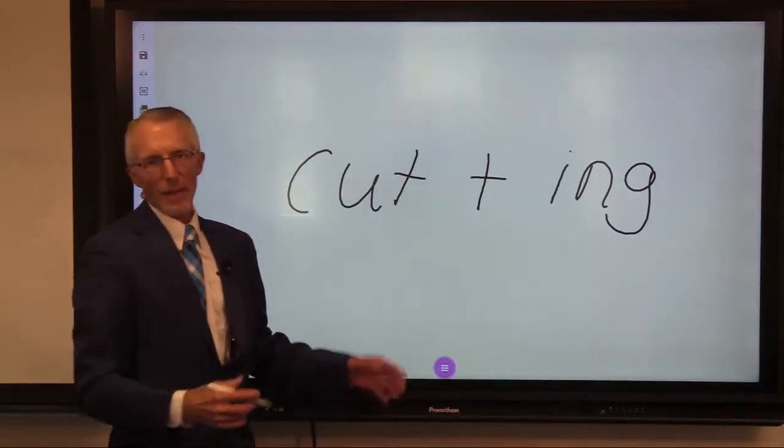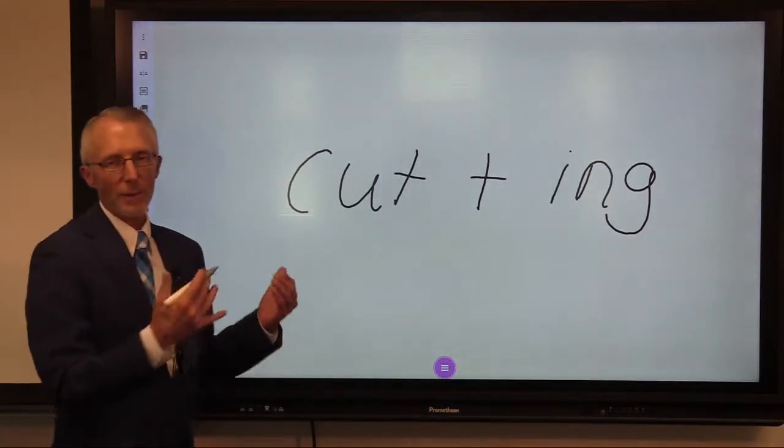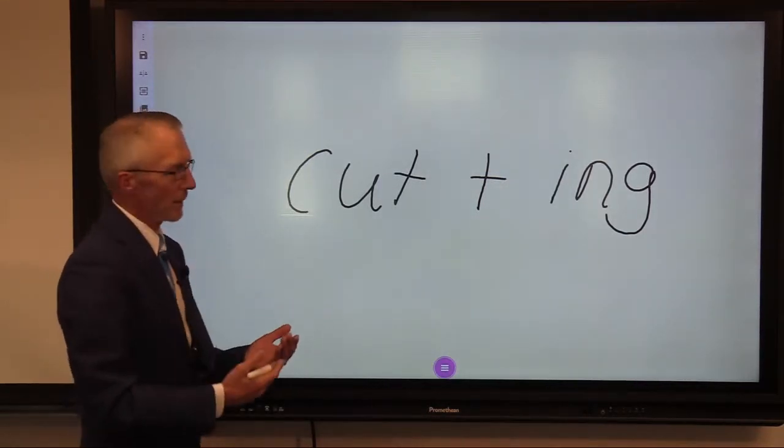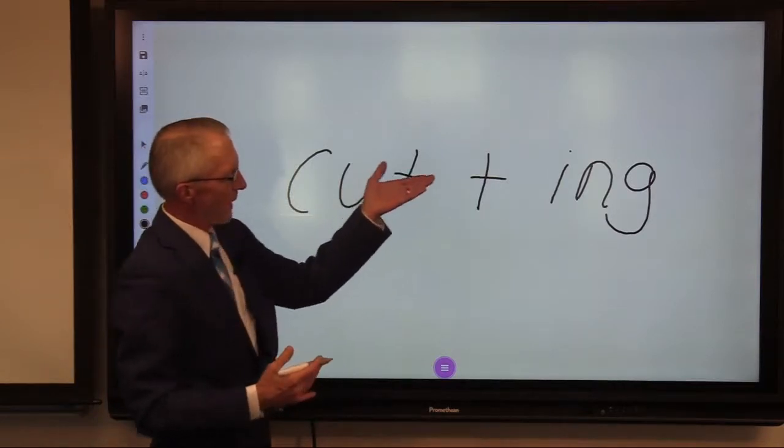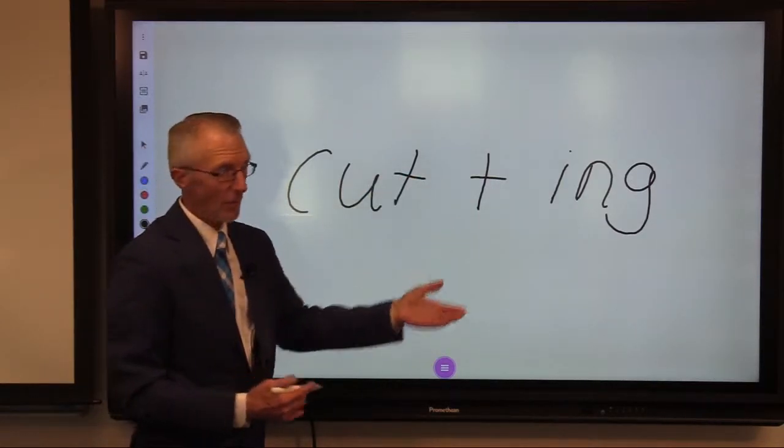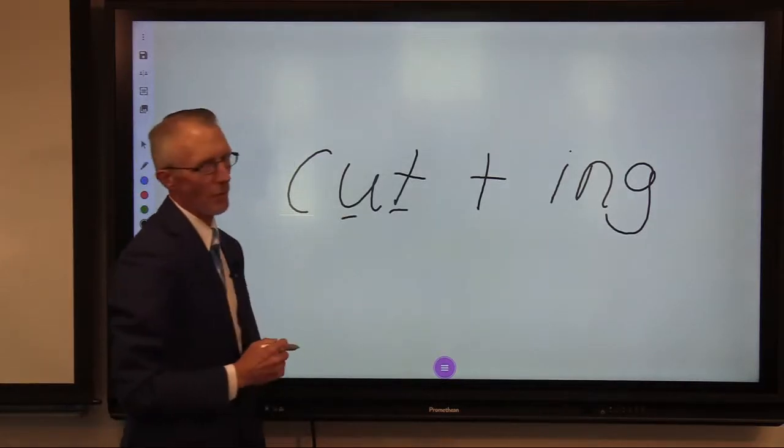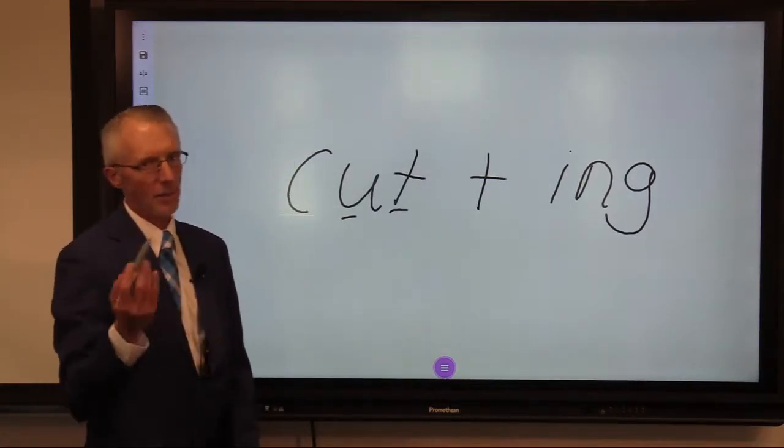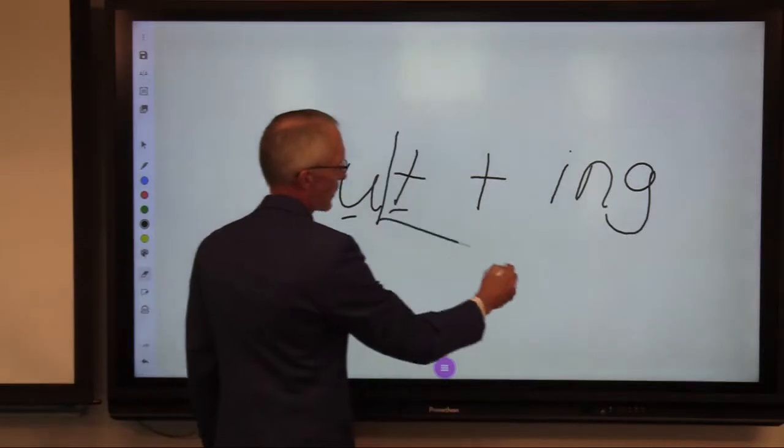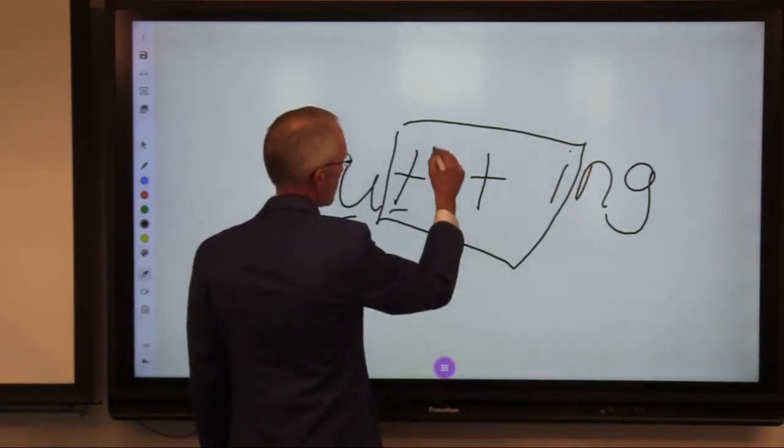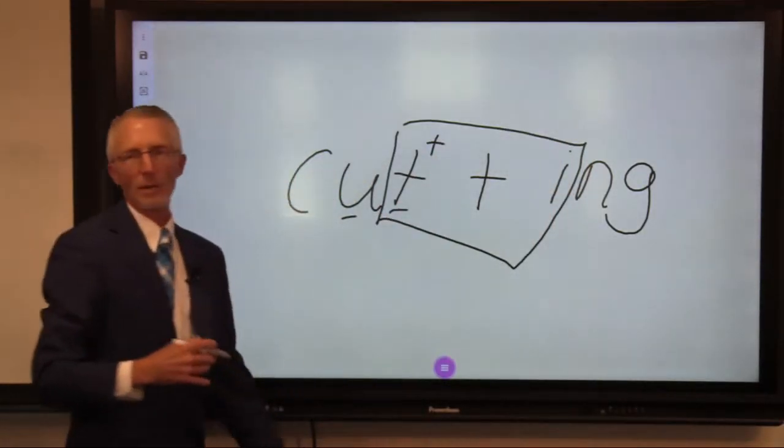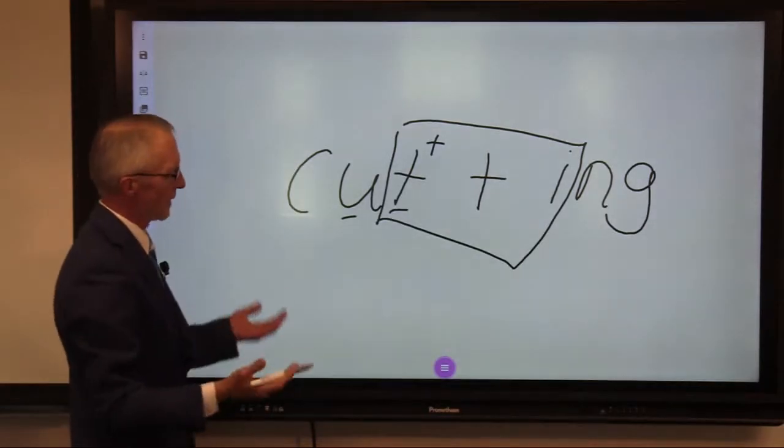So now we're taking a look at do we double the consonant? And if we do, we use the same letter. So we take a look: if our suffix begins with the vowel, if we have one consonant, and we have one vowel before that consonant, we double the consonant. Here's the way we do it. Check our joins. We do double, so we put a small T up there. We don't cross anything out. We're doubling.